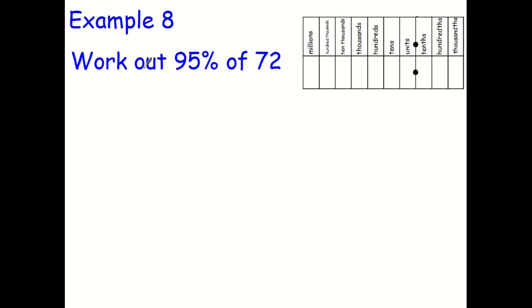Example 8. You can, of course, do 0.95 multiplied by 72. You can do that by all means, using a multiplication method of your choice. Or this method is equally fine. 10% of 72 is 7.2. And to get 5% of it, I need to divide by 2, which gives me 3.6.